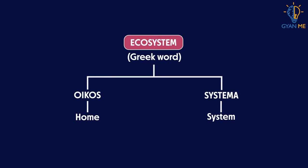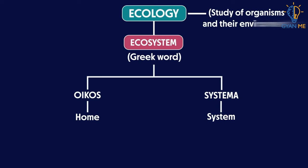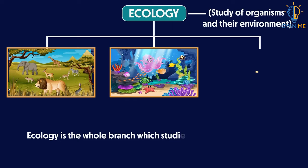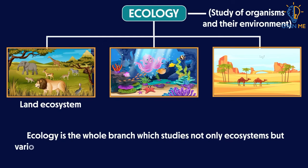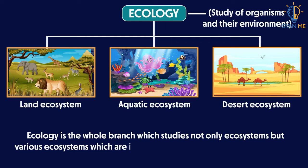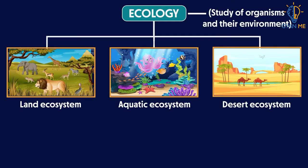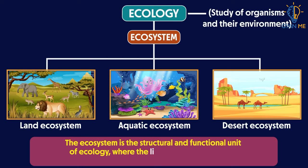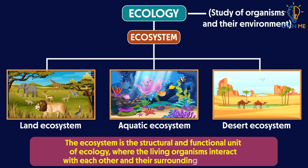It is studied under a branch of science called ecology, which is the study of organisms and their environment. Ecology is the whole branch which studies not any one particular ecosystem, but various ecosystems which are interlinked and connected with each other. In other words, the ecosystem is a structural and functional unit of ecology, where living organisms interact with each other and their surrounding environment.